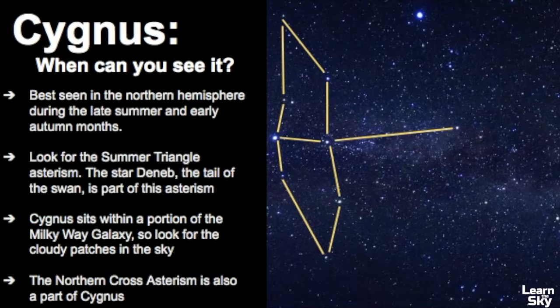Sometimes Cygnus is identified as another asterism called the Northern Cross, and the Northern Cross is just a smaller pattern within the larger constellation of Cygnus.